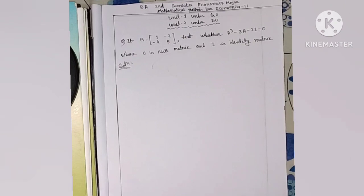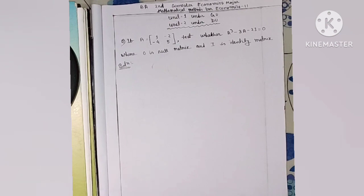We will check left hand side and right hand side. We will compute the left hand side of the equation: A cubed minus twice A minus twice I. If the solution equals zero, that means left hand side and right hand side are equal and the result is a null matrix. If it is not a null matrix, then left hand side and right hand side are not equal.